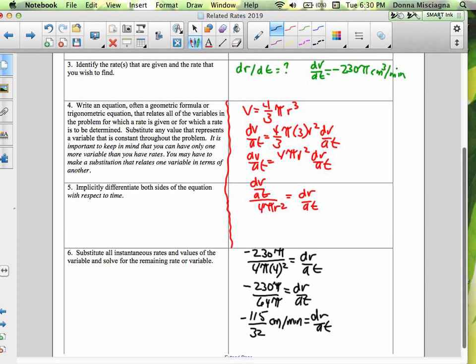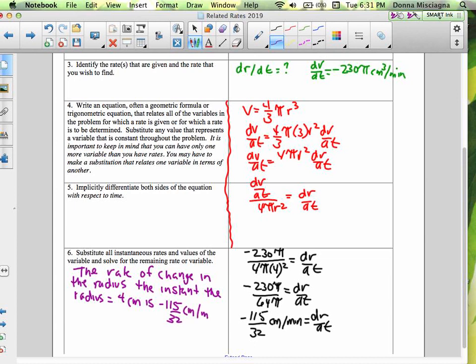And there we go, that's all there is to it. So let's put our little answer thing right here. So we were finding the change in the radius. Anyways, the rate of change in the radius, the instant the radius equals 4 centimeters is negative 115 over 32. And there we go, we've answered the question. So come back and in the next video, we'll do another problem. And I'm actually going to be using this form for a little while. Thanks for watching. Bye for now.